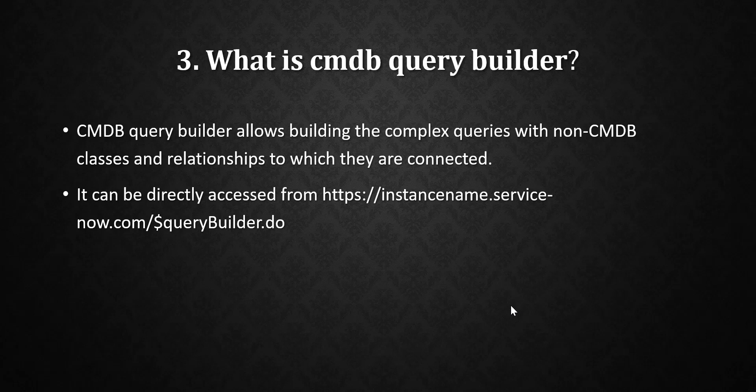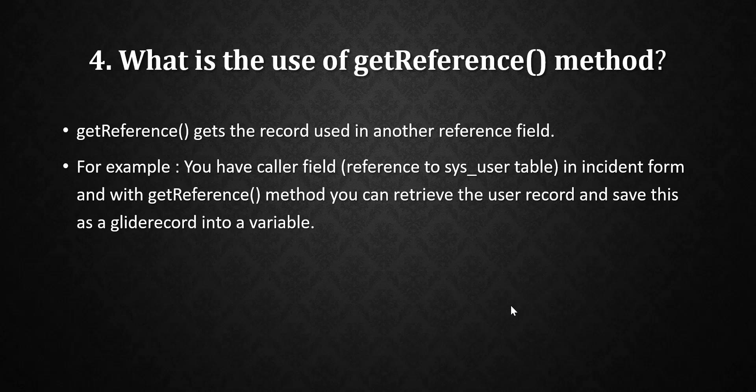The next question is: what is the use of the getReference() method? The getReference() method gets the record used in a reference field. For example, if you have a Caller field in the incident form, with getReference() you can retrieve the user record and save it into a GlideRecord variable — for instance, to populate the caller's mobile number or department.